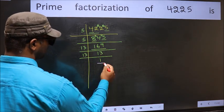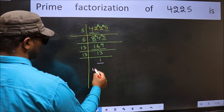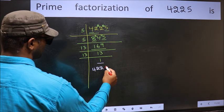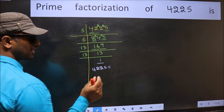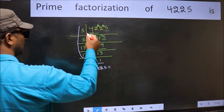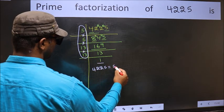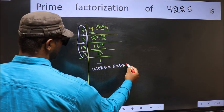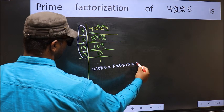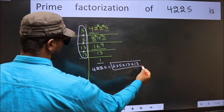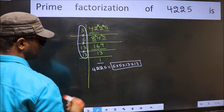So we got 1 here. So the prime factorization of 4225 is the product of these numbers. That is, 5 into 5 into 13 into 13. This is the prime factorization of 4225.